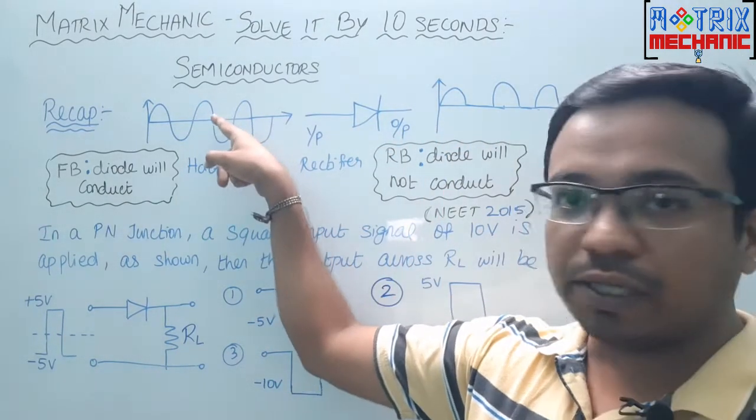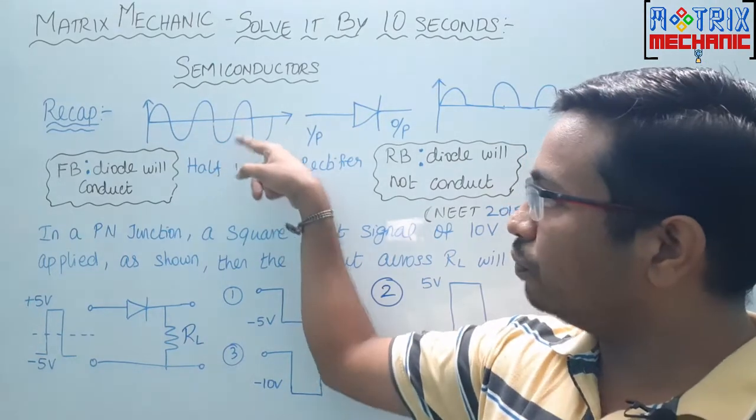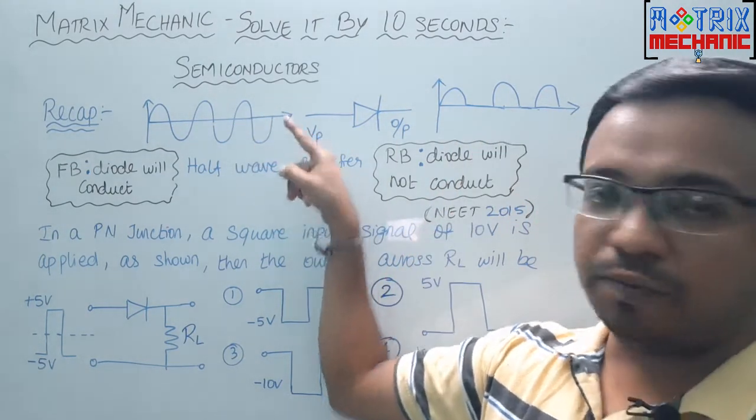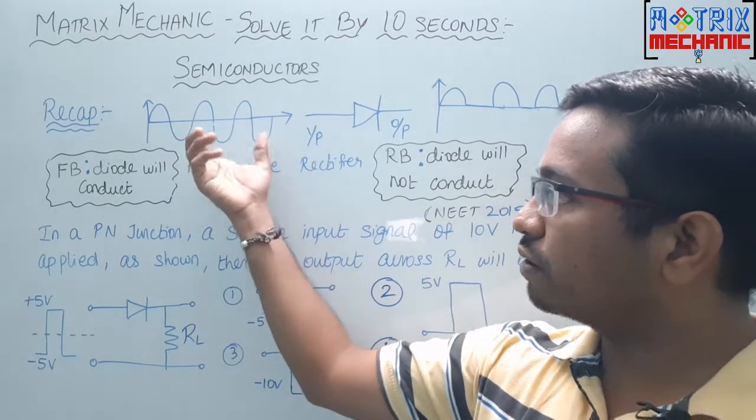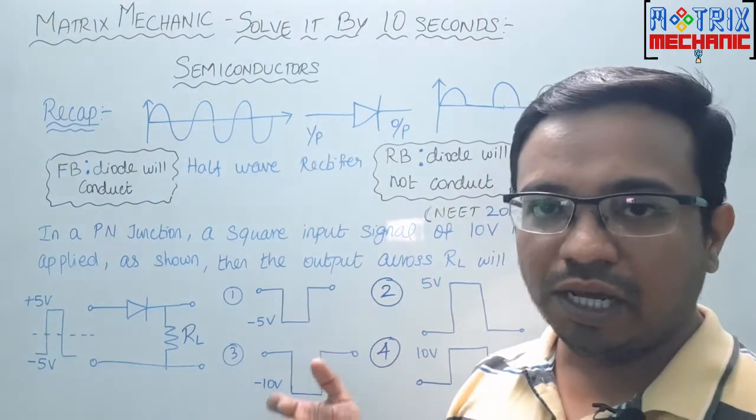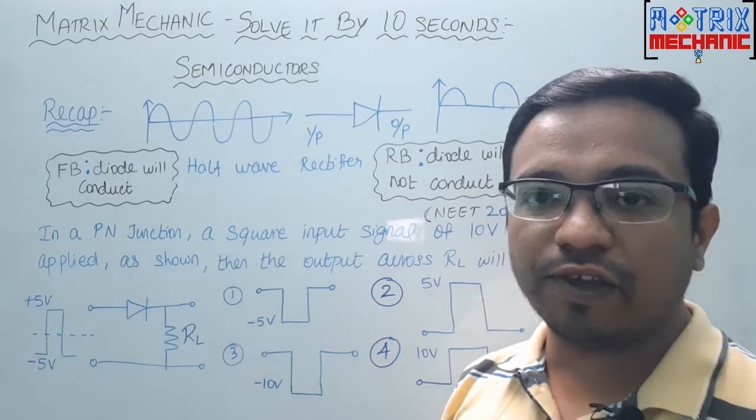Now similarly, again the positive pulse, the diode will conduct. The negative pulse will not conduct. Again, positive pulse, the diode will conduct, and negative pulse will not conduct. That is why I am giving a full portion, but getting only the half portion of this one. That is why it is named as half wave rectifier.